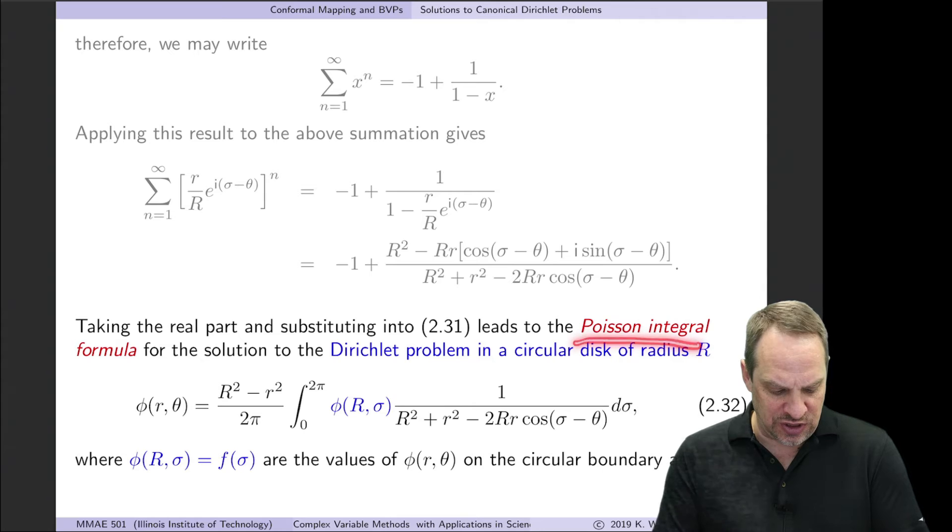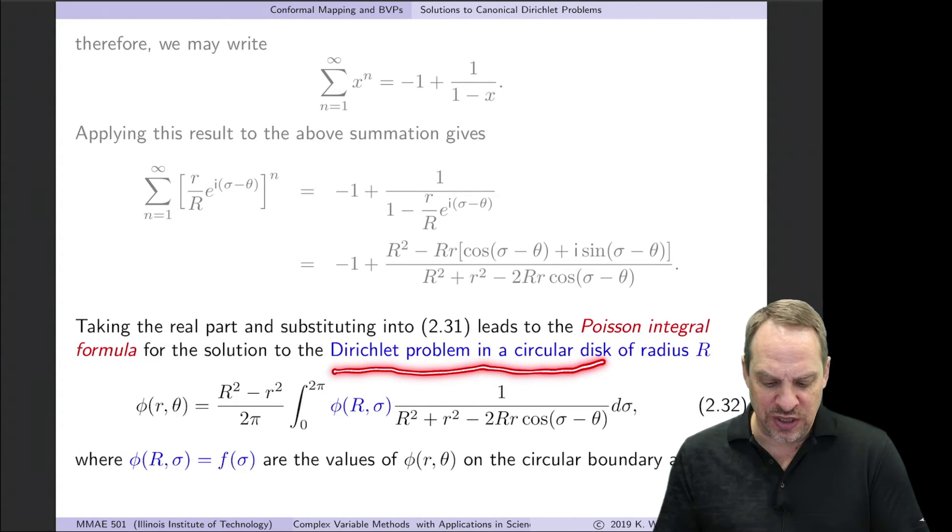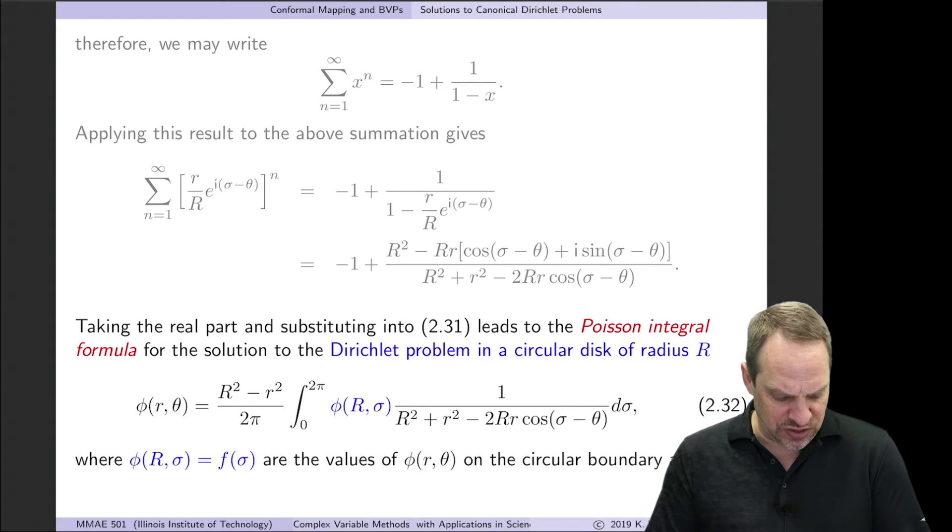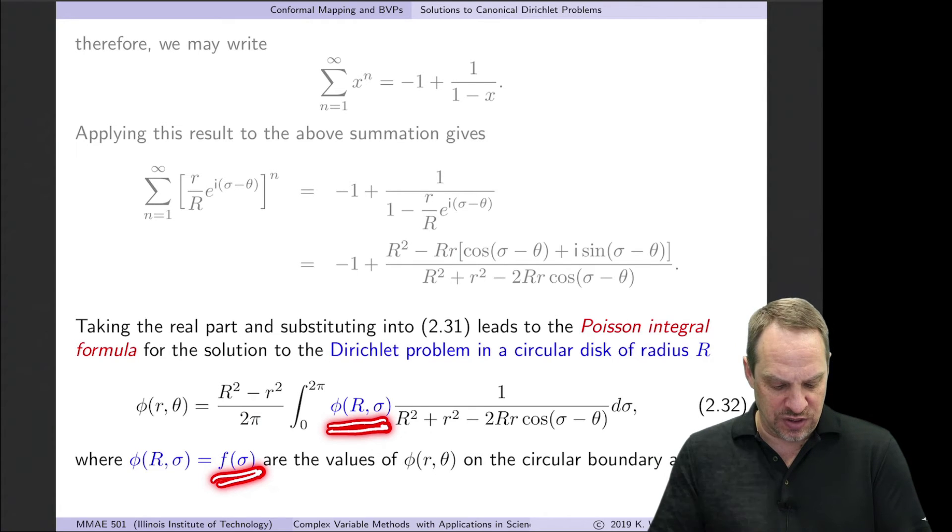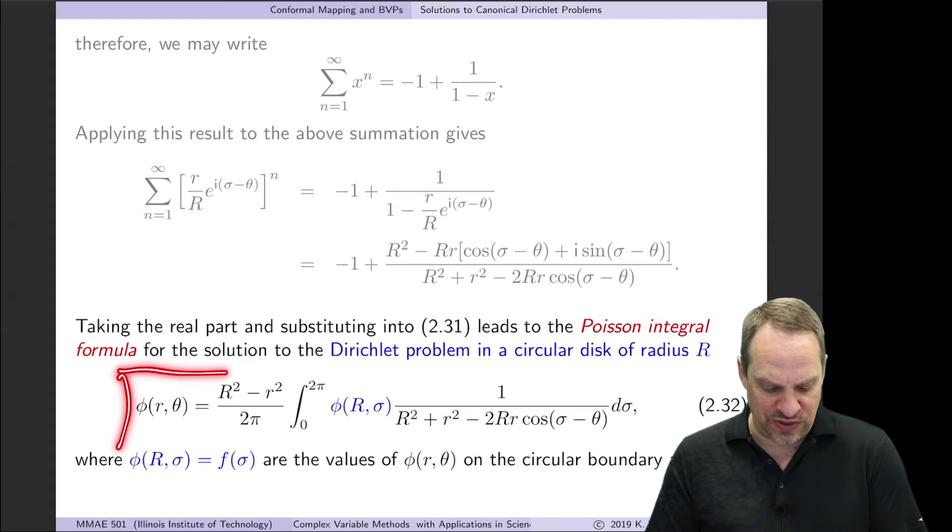This is our first of the Poisson integral formulas, and this is the solution to the Dirichlet problem in a circular disk of radius capital R. Let's just walk through it. This is the value of phi at any r theta within the interior of the circular disk. Capital R, of course, is the radius of the disk, and you see that here and here. And remember, theta is the argument for points inside the domain, and sigma is the argument for points on the domain boundary. So we're integrating around the boundary. And the boundary conditions are given by the phi of capital R sigma here. That's the f of sigma that we're given boundary conditions on the circular boundary. So given the boundary conditions, this is the integral that we would have to evaluate.